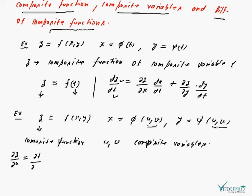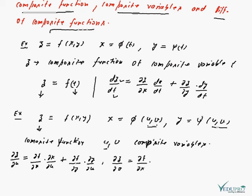Del z over del u is equal to del f over del x into del x over del u, plus del f over del y into del y over del u. Similarly, del z over del v equals del f over del x into del x over del v, plus del f over del y into del y over del v.